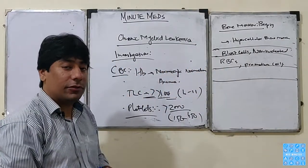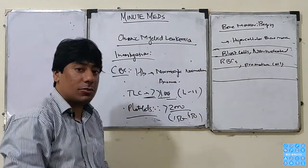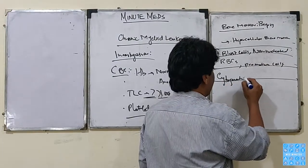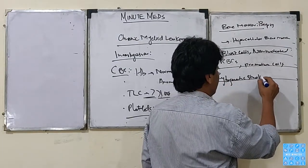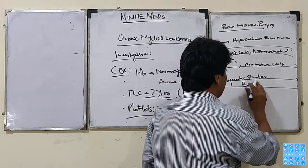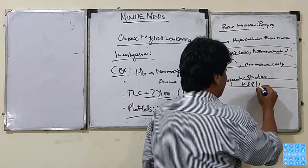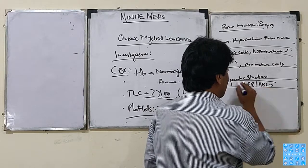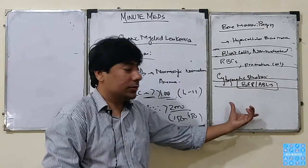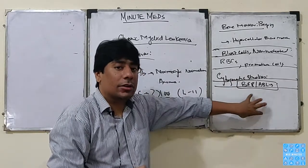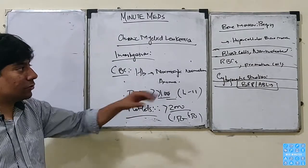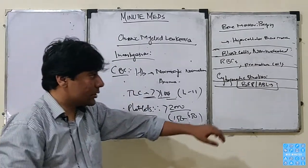To confirm the diagnosis, we confirm the BCR-ABL combination, which has tyrosine kinase activity and leads to all those features. This is the confirmatory test.